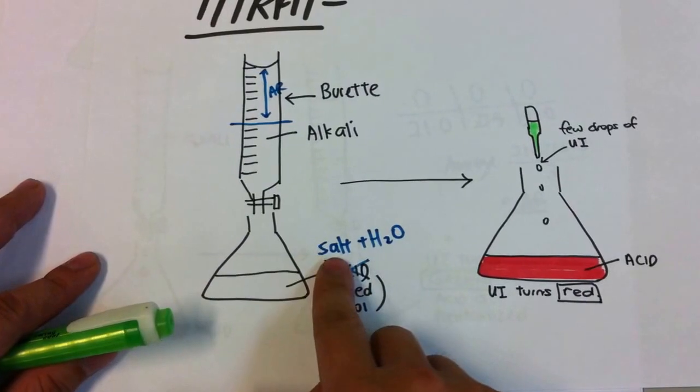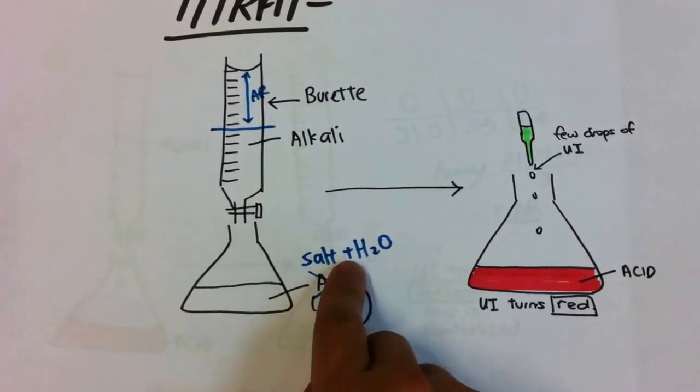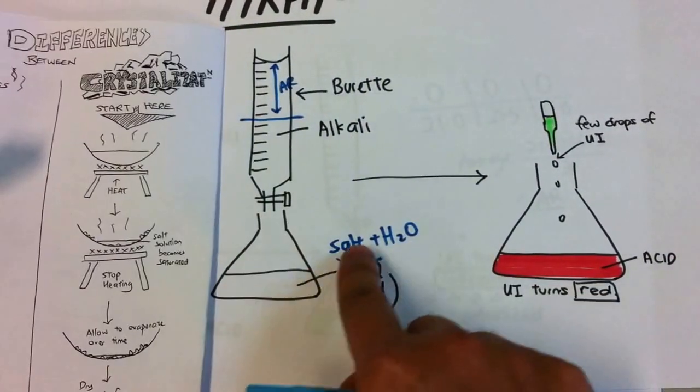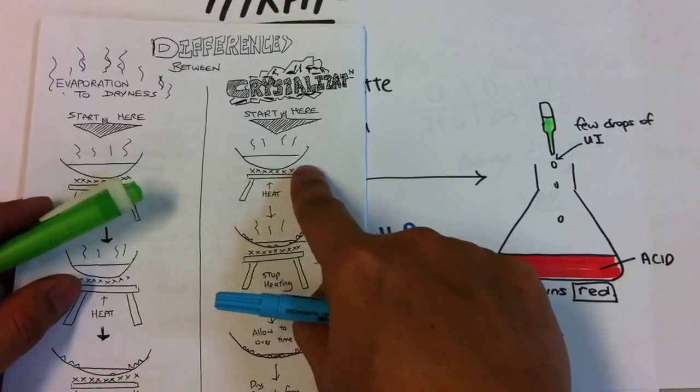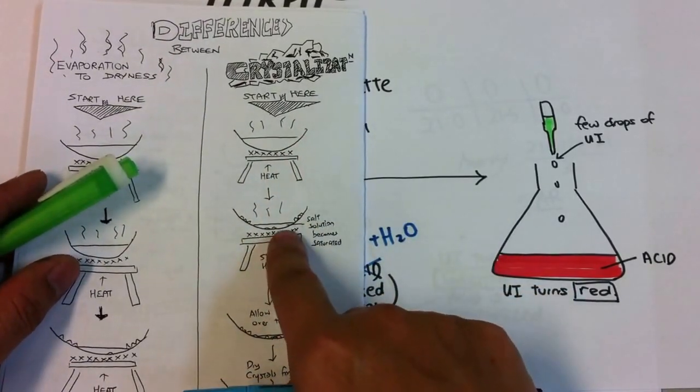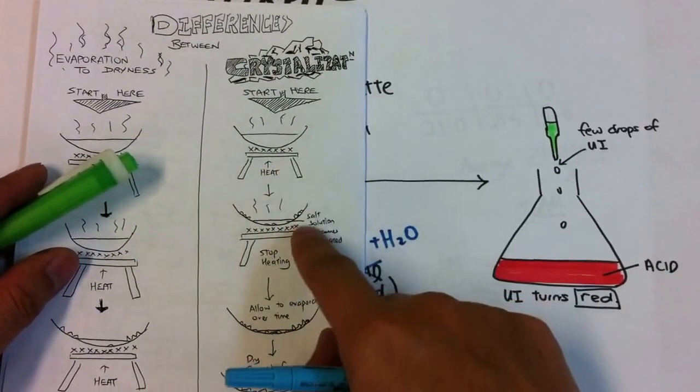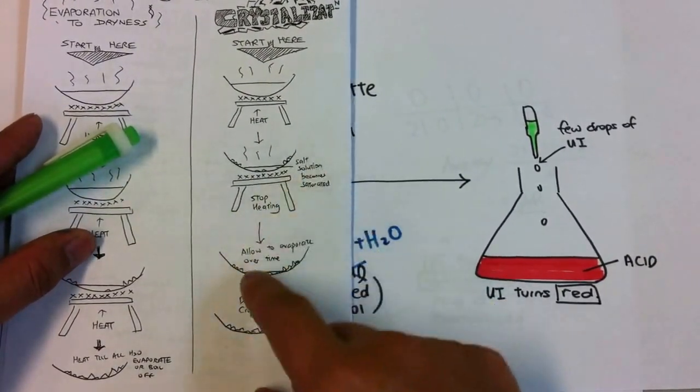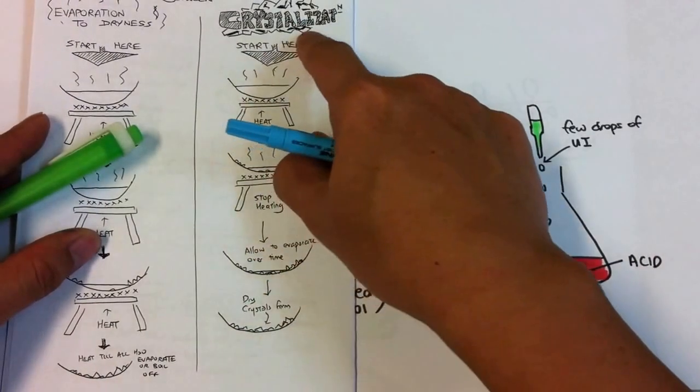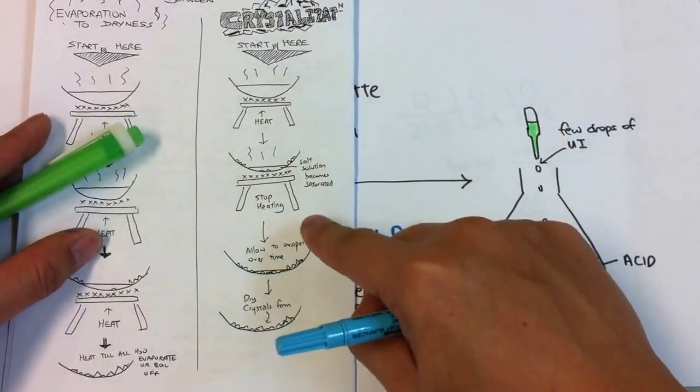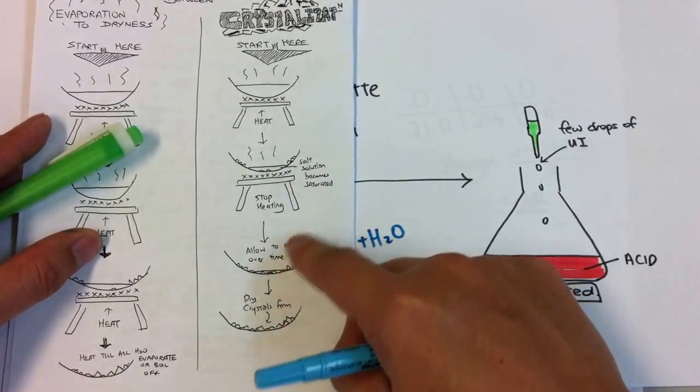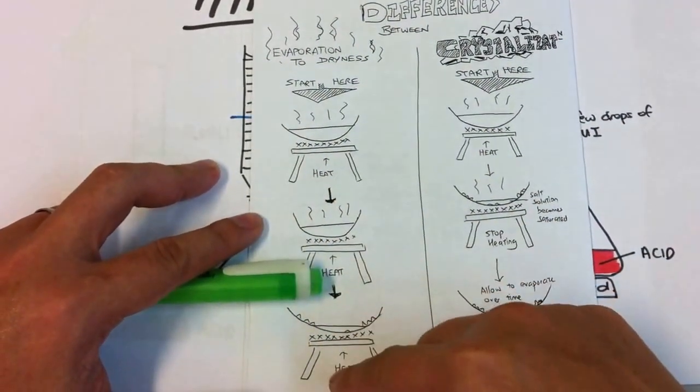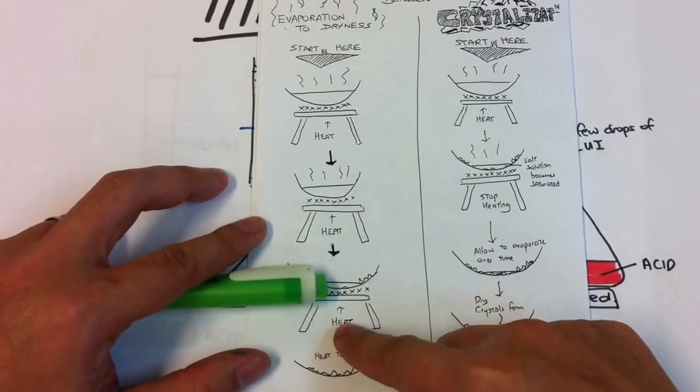What do I do with this? I will just put the salt solution and water into an evaporating dish. Heating it until about maybe 75% of the water has evaporated and leaving it to cool over time and letting water evaporate at room temperature. And I will get dry crystal. Crystallization basically is heating, stopping, allowing it to evaporate gradually. Evaporation to dryness is just heating it all the way until the water just simply boils off. So two different techniques.